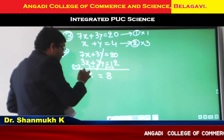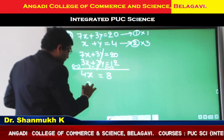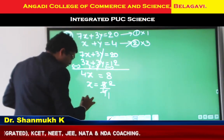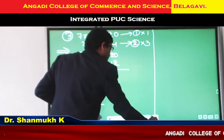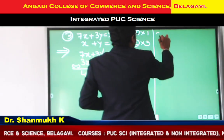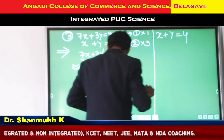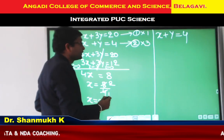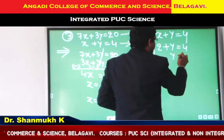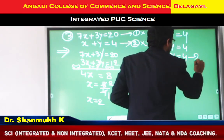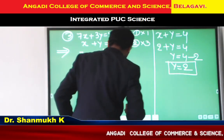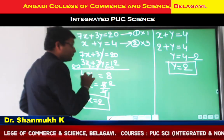Transporting 4 to the RHS, it is division: X equal to 8 divided by 4. Cancelling, we get X equal to 2. Take the simpler equation 2: X plus Y equal to 4. Substitute X as 2: 2 plus Y equal to 4. Transposing, Y equal to 4 minus 2. We get the value of Y as 2. By elimination method, we get X equal to 2 and Y equal to 2.